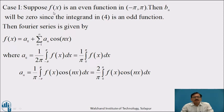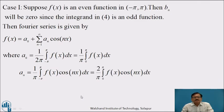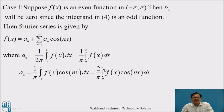Case 1: Suppose f(x) is an even function in (−π, π). Then bₙ = 0, since the integrand f(x) sin nx in equation (4) is odd (product of even and odd). The Fourier series reduces to f(x) = a₀ + Σ(n=1 to ∞) aₙ cos nx, where a₀ = (1/π) ∫₀^π f(x) dx and aₙ = (2/π) ∫₀^π f(x) cos nx dx.